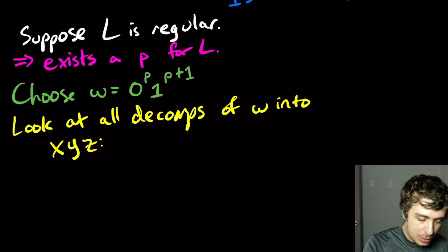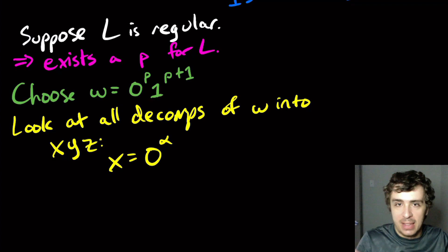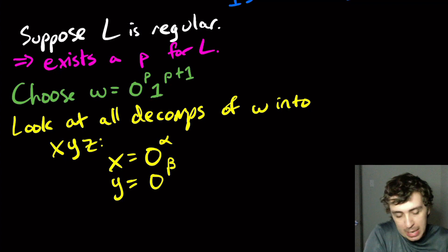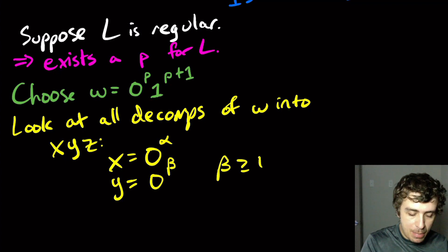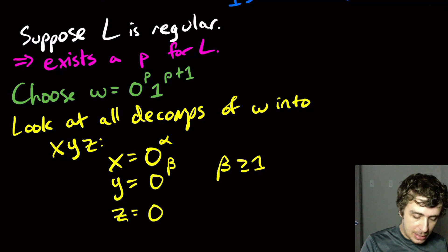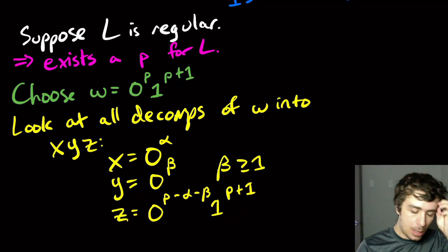So we know that X is going to be some number of 0s. Let's just call it 0 to the alpha. So alpha is the number of 0s that X has, or just the length of X is the same thing. And Y could be a totally different number of 0s. I have no idea what it is. I know that beta must be at least 1, because Y has to be non-empty. And Z is the rest of the string, because we're only three parts. And just like the 0 to the n, 1 to the n proof, we're going to get something very, very similar. So note that Z has all of the 1s still, but this is the remaining set of 0s.